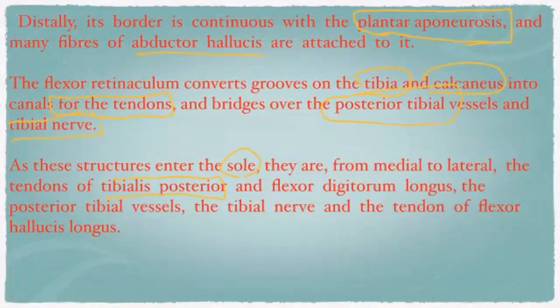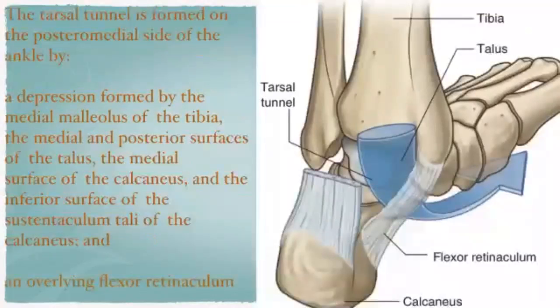As these structures enter the sole, from medial to lateral they are: tendon of tibialis posterior, flexor digitorum longus, posterior tibial vessels and tibial nerve, and then flexor hallucis longus. So from medial to lateral: tibialis posterior, flexor digitorum longus, and flexor hallucis longus tendons.